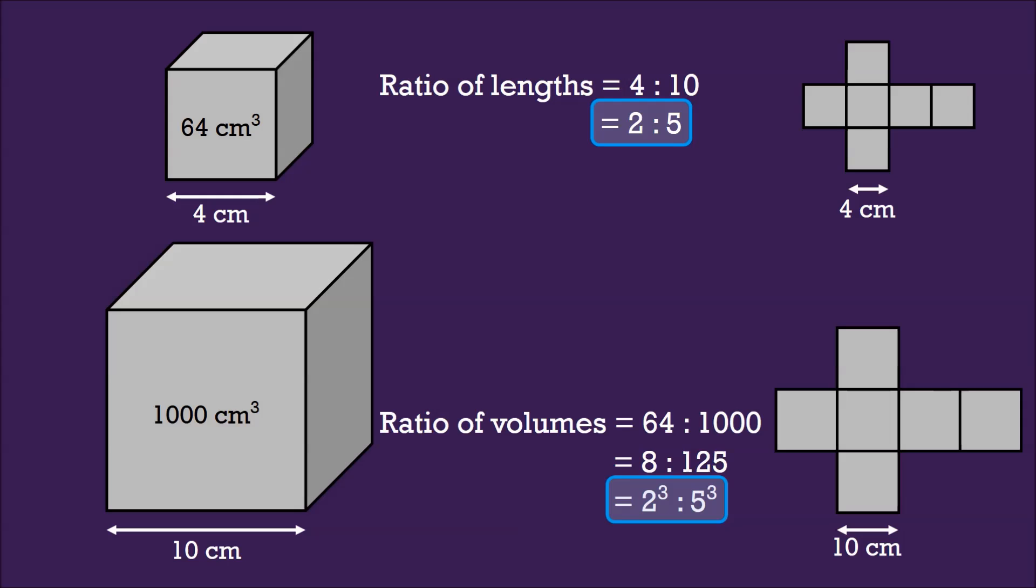Now, the total surface area of the smaller cube would be 16 for each face, which gives it 96. And the total surface area of the bigger cube would give us 100 for each face.